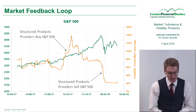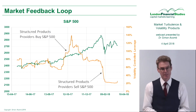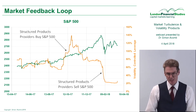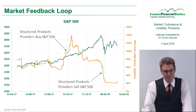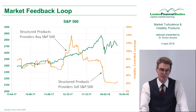So what about the market feedback loop for these volatility-controlled indices? Here's what happened during February of 2018 for a 5% volatility-controlled product in the S&P.